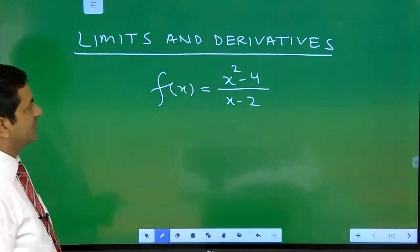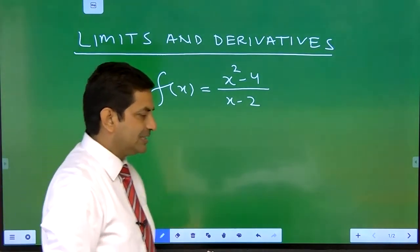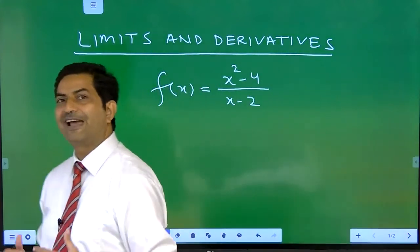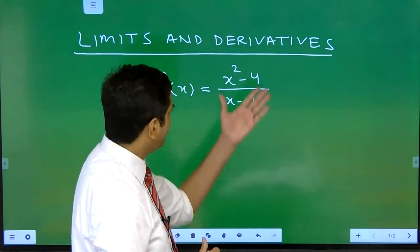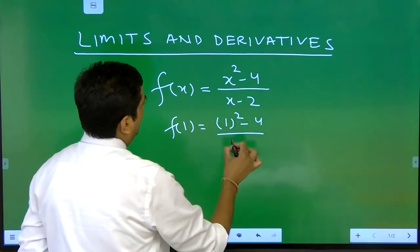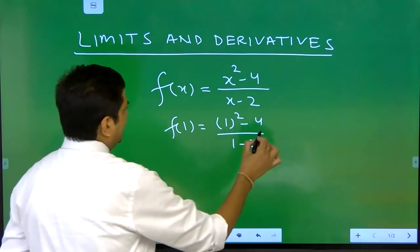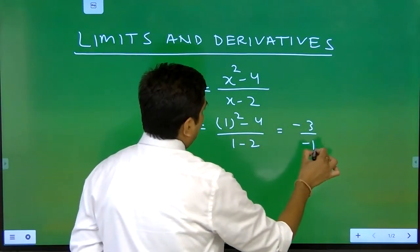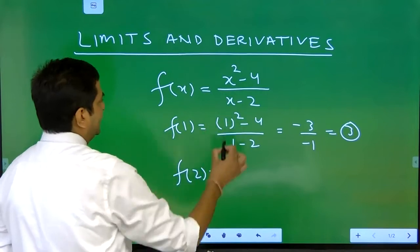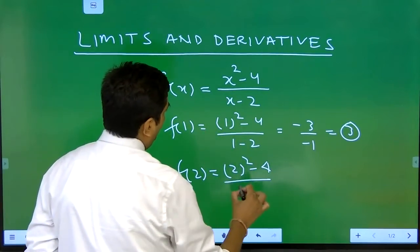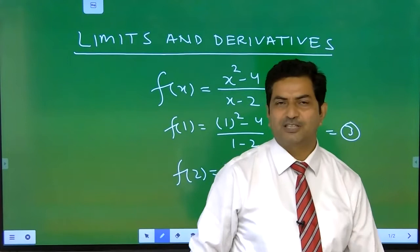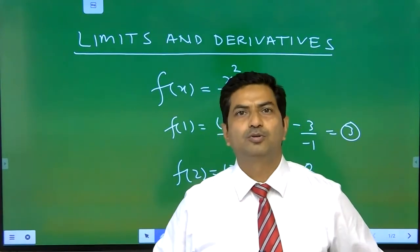Let us consider a function f(x) = (x² - 4) / (x - 2). You know how to find the value of a function at a point. If you have to find the value at x = 1, it is (1² - 4) / (1 - 2) = -3 / -1 = 3. If you find the value at x = 2, it comes out to be (2² - 4) / (2 - 2) = 0/0. So in this situation, the value of the function at x = 2 is not known to us.